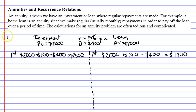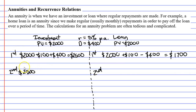What do we do when we come to the second year? Looking at the investment, we've got to think to ourselves how much money is in our bank account. We started with $2,000, but we now have $2,500, so we need to start with that. When we calculate our interest, we're actually going to calculate 5% of what's in our bank — 5% of $2,500, not $2,000.